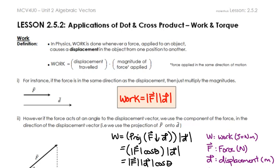Work is done when you are taking a certain amount of force and applying it onto an object — we measure that in newtons — and you're multiplying that with how far that object is displaced from one position to another. That distance is usually measured in meters. When you multiply those two components together, you get the amount of work done, and that's measured in joules.